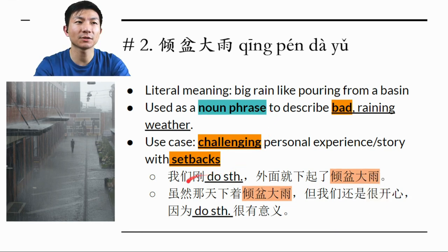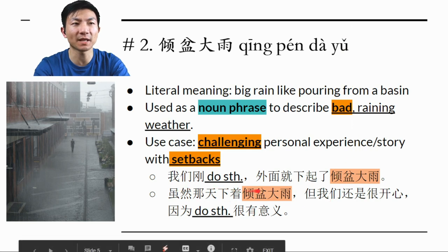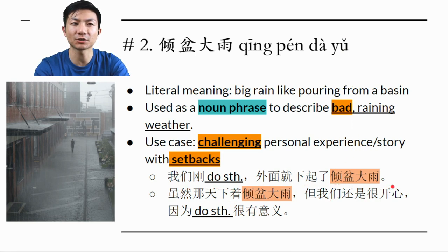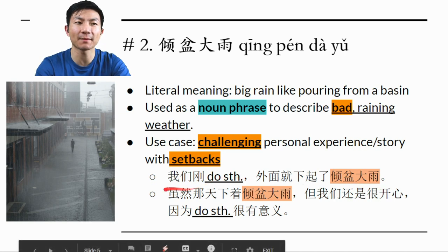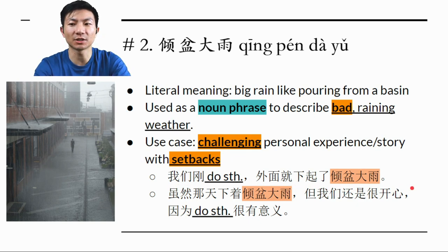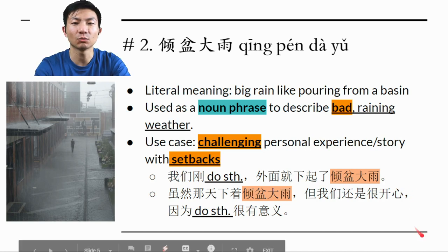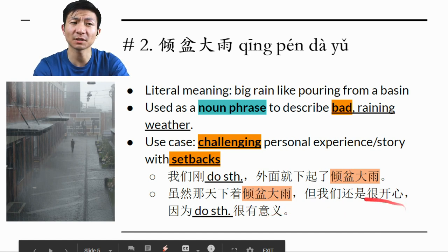First example: 我们刚 do something，外面就下起了轻盆大雨. So in a story, you and your friends were planting trees, and after you finished, it was raining, and even though you guys got wet, you still felt very happy. 我们刚种完树，外面就下起了轻盆大雨。虽然大家都淋湿了，但是我们还是觉得很开心，因为我们为保护环境出了一份力.